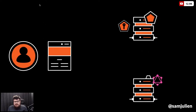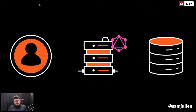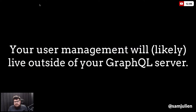The access token heads over to the client, and then the client sends it to the server — in our case a GraphQL API. Because the GraphQL server is concerned with what's happening with the database, the authentication stuff is not really happening on the GraphQL side. All we're concerned about is authorization. Your user management — the authentication part — is going to live outside of your GraphQL server most of the time, even if it's on the same physical machine, it's likely in a different layer.